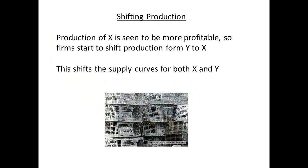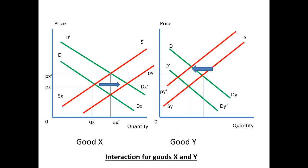Now let us consider what might happen next. If the production of X is more profitable, then firms may shift from producing Y to producing X. This will then shift the supply curves for both X and Y. Just focus on the supply curves — the red lines. For X, the shift is to the right. For Y, the shift is to the left.